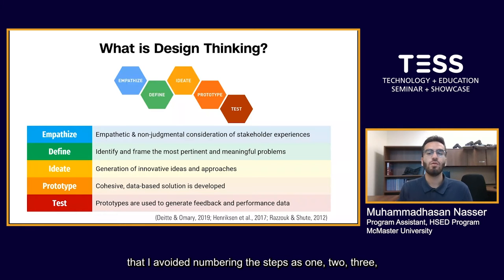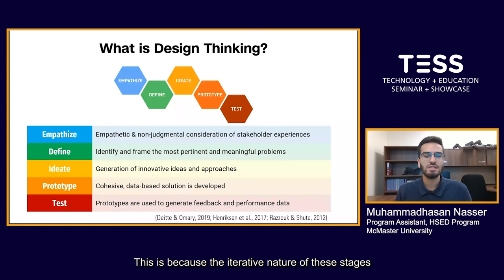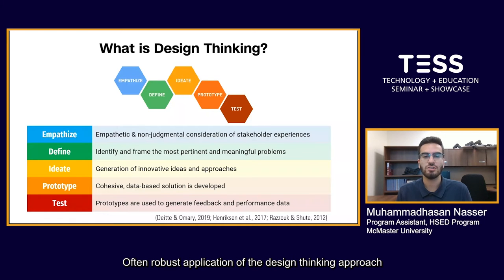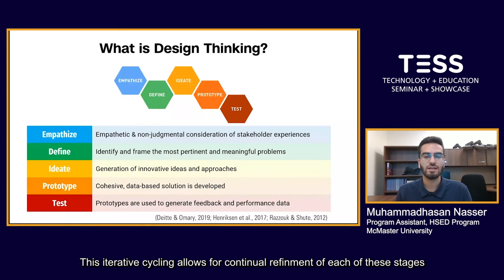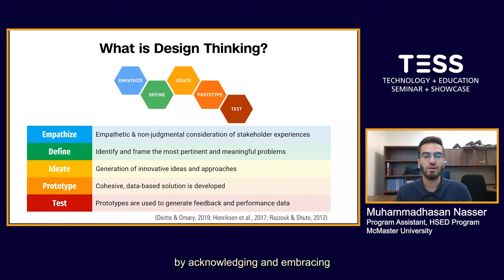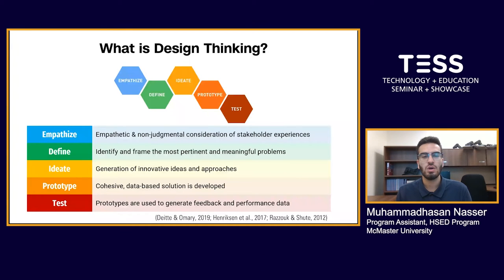You might have noticed that I avoided numbering the steps as one, two, three, and so on. This is because the iterative nature of these stages is central to design thinking. Often robust applications of the design thinking approach require cycling through these phases numerous times. This iterative cycling allows for continual refinement of each of these stages by acknowledging and embracing the interconnectedness of stakeholders' experiences with the solutions designed to enhance them.